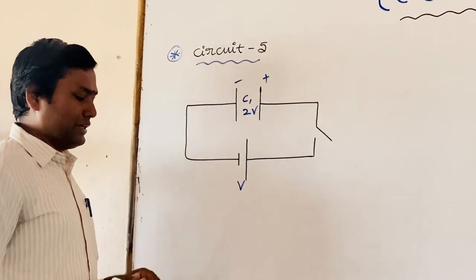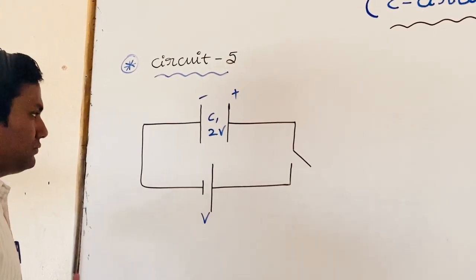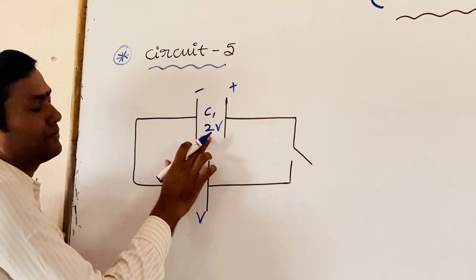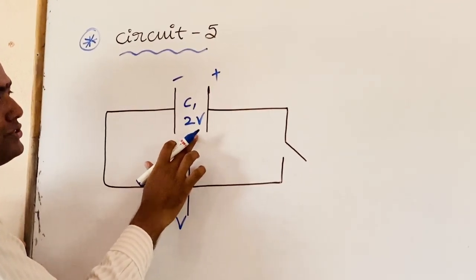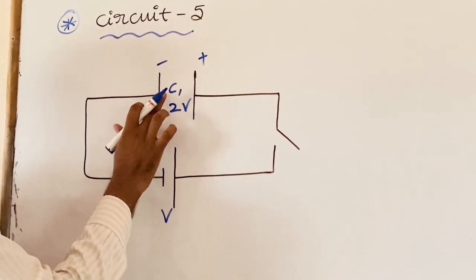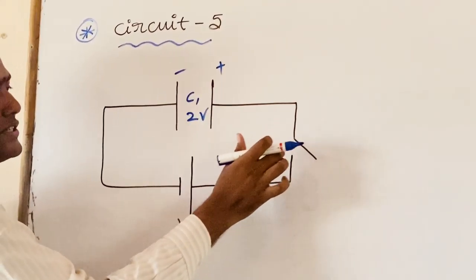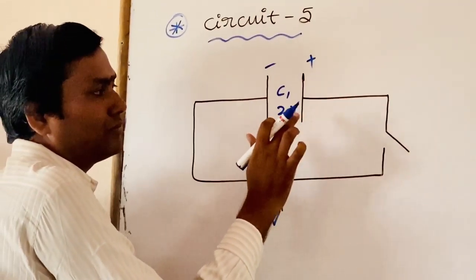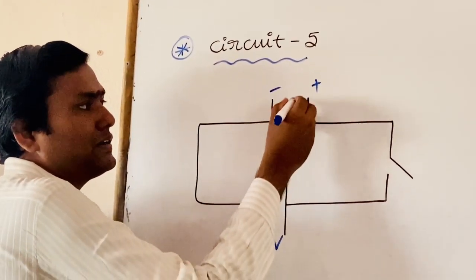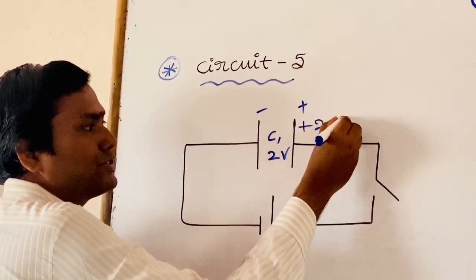This is Circuit 5. In Circuit 5, there is one capacitor. This capacitor is charged to a potential of 2V and its capacitance is C. Before closing the switch, the charge on the positive plate is plus 2CV.